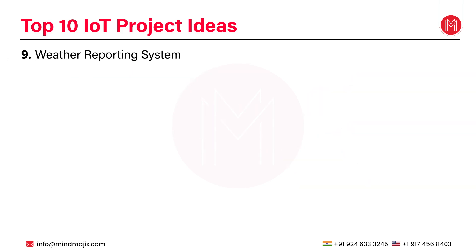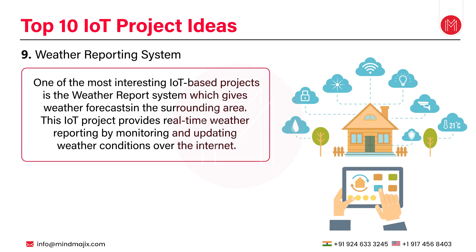The next project is a weather reporting system. One of the most interesting IoT based projects, it gives weather forecasts in the surrounding area and provides real-time weather reporting by monitoring and updating weather conditions over the internet. This system tracks three critical parameters: temperature, humidity and rainfall. It can be built using Raspberry Pi, a raindrop sensor, a temperature sensor, an LCD screen and a buzzer. When the system is turned on, it sends weather information to the web server using Wi-Fi, and these values are updated in real time on the online server. Red, yellow and green alerts can be set to identify extreme calamities such as tsunamis, heavy rainfall and volcanoes.